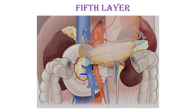Now we come to the fifth layer. In the fourth layer we placed the duodenum, pancreas, and spleen in front of the kidneys and ureters. Now we add the ascending colon, the beginning and end of the transverse colon, and the descending colon. The fifth layer is mainly the colon — ascending and descending with the transverse colon. Between the ascending, descending, and transverse colon, the entire central area is filled by the small intestine.